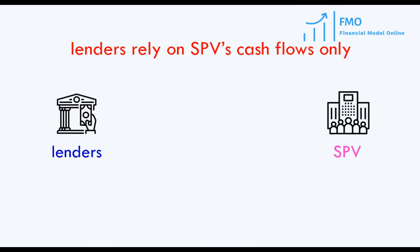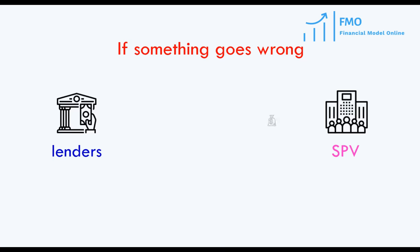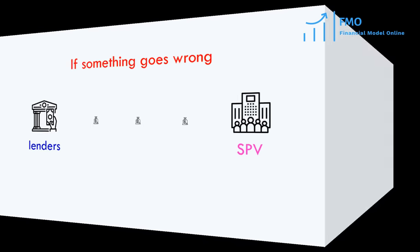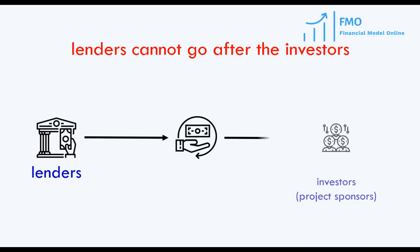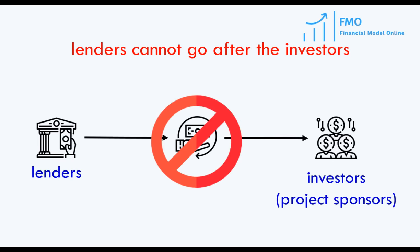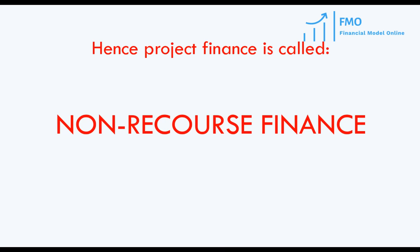As we pointed out, the assets and cash flows of the project are isolated, and therefore lenders rely on the project's cash flows only. In case something goes wrong and project cash flows decrease, resulting in the SPV not being able to service the debt, the lenders cannot go after the project sponsor's other assets. Therefore, project finance is called a non-recourse financing. Lenders have no recourse to the project sponsor's other assets.